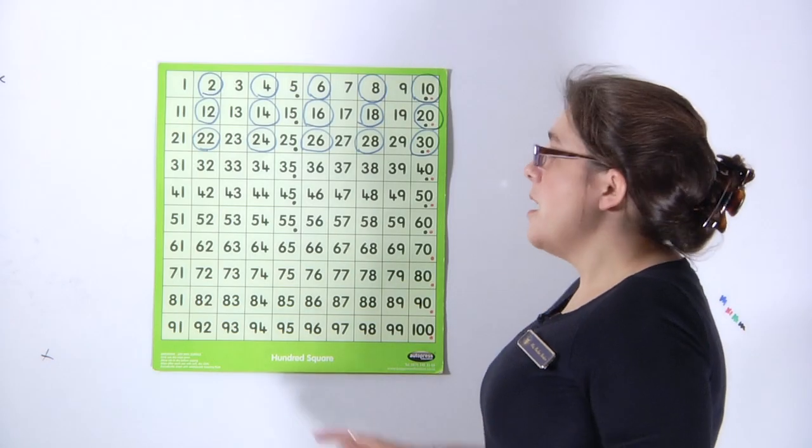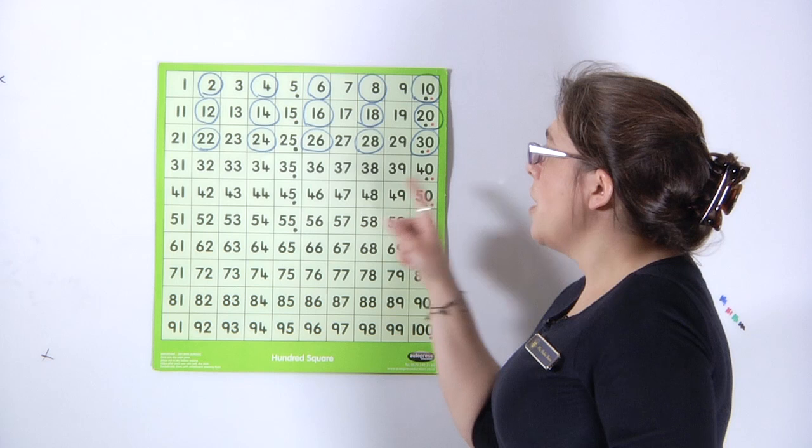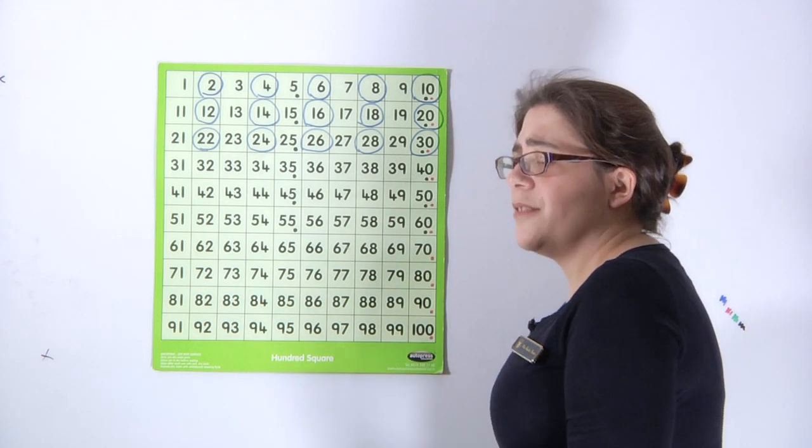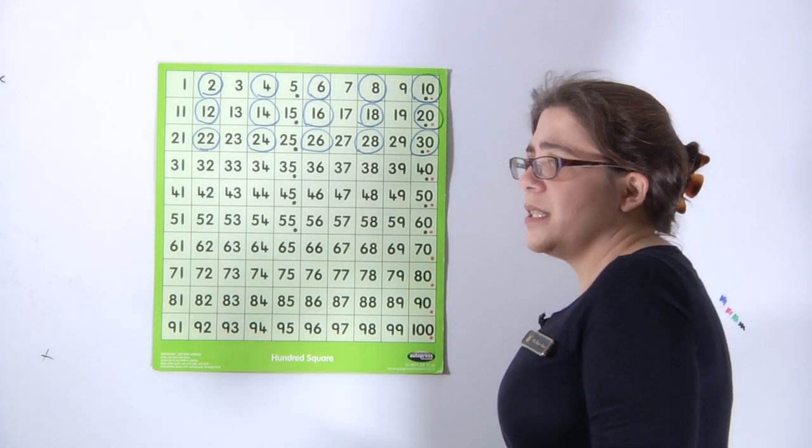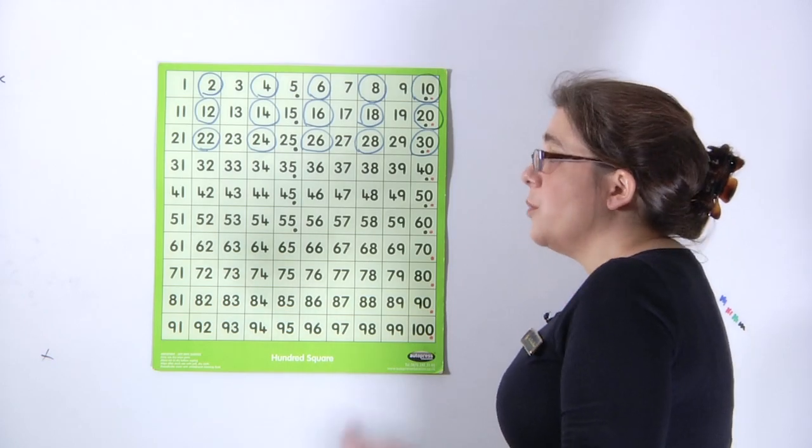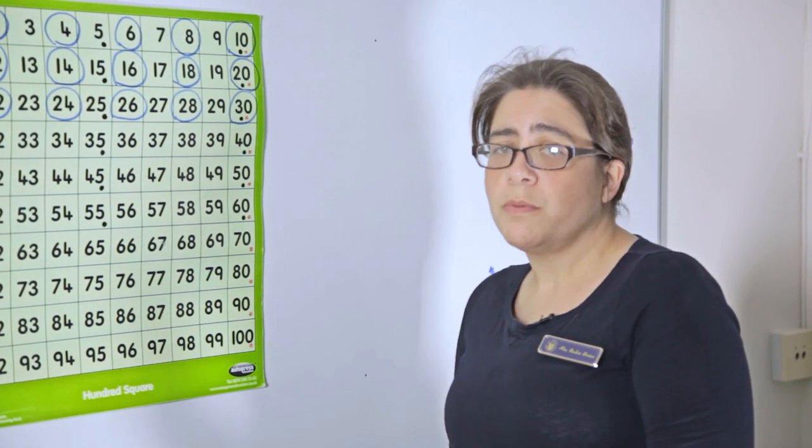The children start to learn that these counting steps are the numbers that appear in different times tables. So by counting in twos, you're looking at the numbers that will be in the two times table. And they begin to know that they are called multiples. Members of the two times table family or five times table family are the five times table multiples.